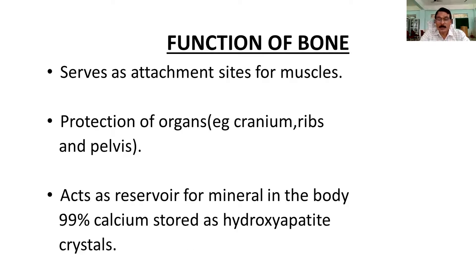Bone is basically a connective tissue, so it necessarily serves some purposes. It serves as attachment for muscles — muscles have an insertion and origin from where they can work, so muscles have an attachment in the bones. With this attachment, bone can exert various types of function. It also gives protection to various important structures like the brain, the lungs, and the heart by the ribs, and the pelvic organs are also protected by the pelvis.